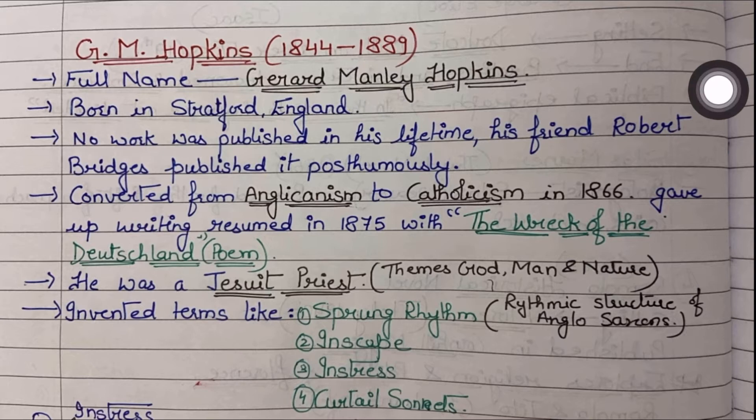G.M. Hopkins was born in the year 1844 and he died in the year 1889. That means he was a Victorian writer. But because all his works are published after his death, sometimes he counts as a modern writer.